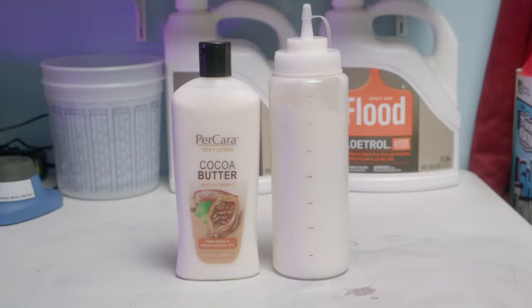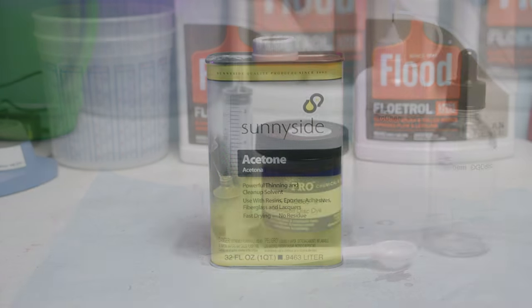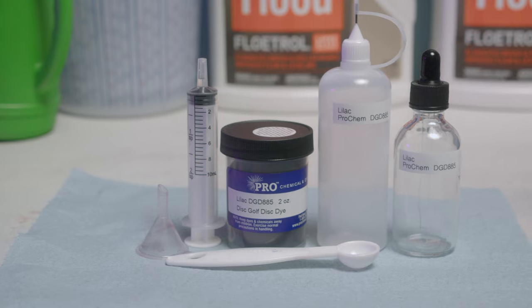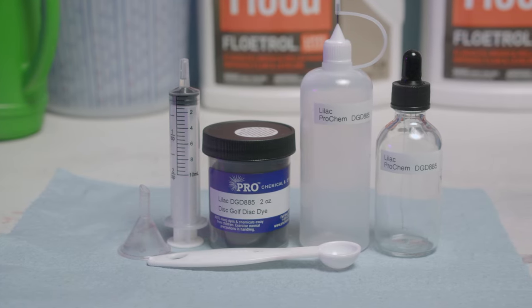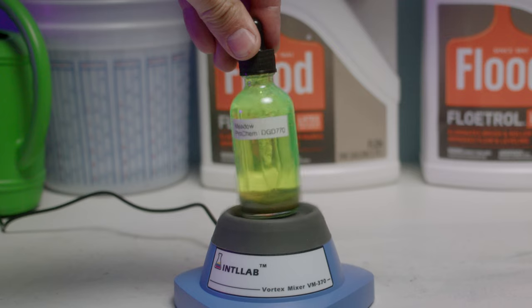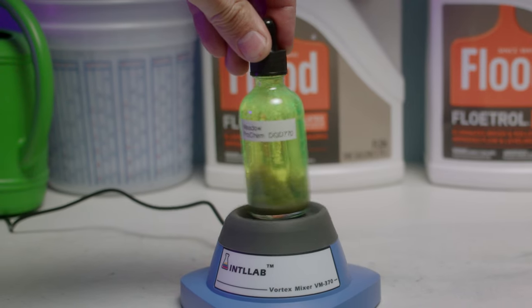The supplies I'll be using are minimal and readily available: cocoa butter lotion, acetone, pro chemical powder disc golf dye, four ounce fine tip bottle, two ounce eyedropper bottle, measuring spoon, small funnel, syringe, and lab mixer. The mixer is totally optional but it helps get a thorough mix really fast.